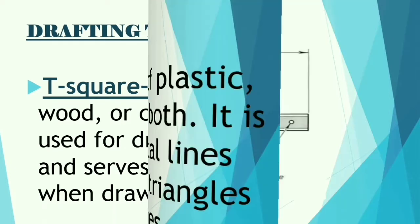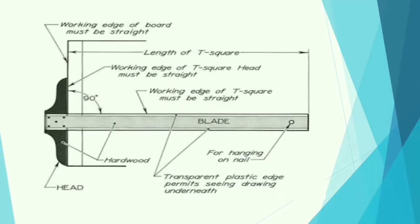So here is what the T-square looks like. It can be made of wood, or plastic, or a combination of both. There you can see the parts of the T-square.